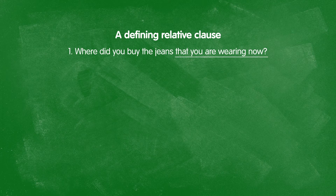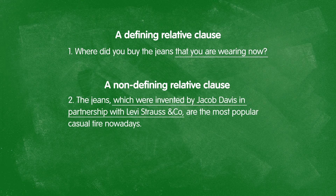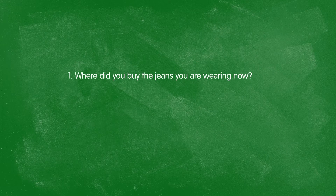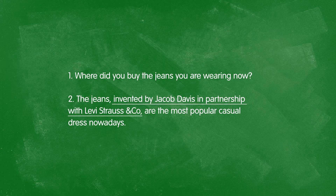The same rule applies in the next two examples. Where did you buy the jeans that you are wearing now? This is a defining clause — they are the jeans you are wearing now, a particular set of jeans. However, in the sentence: the jeans, which were invented by Jacob Davis in partnership with Levi Strauss and Company, are the most popular casual attire nowadays — you don't need 'which were invented.' This just gives extra information, so it is separated from the sentence with commas.